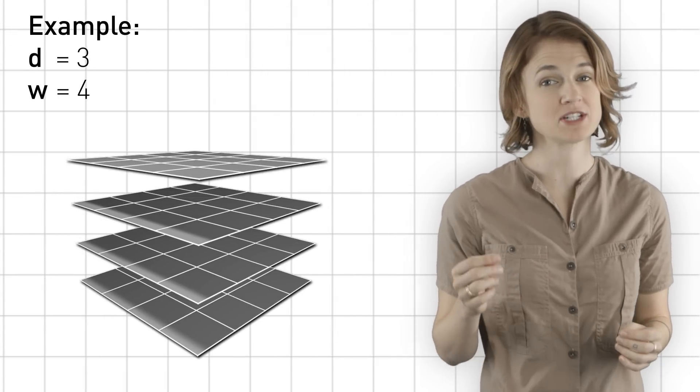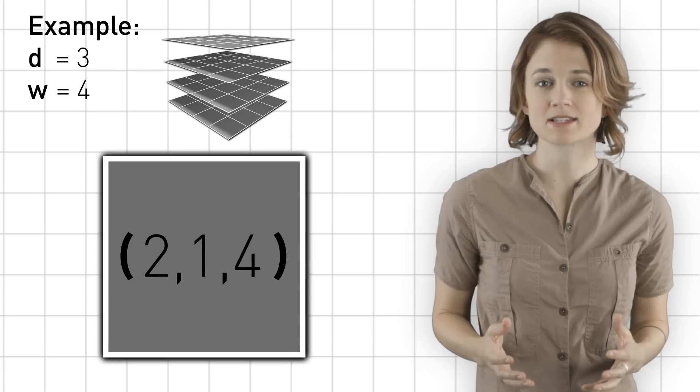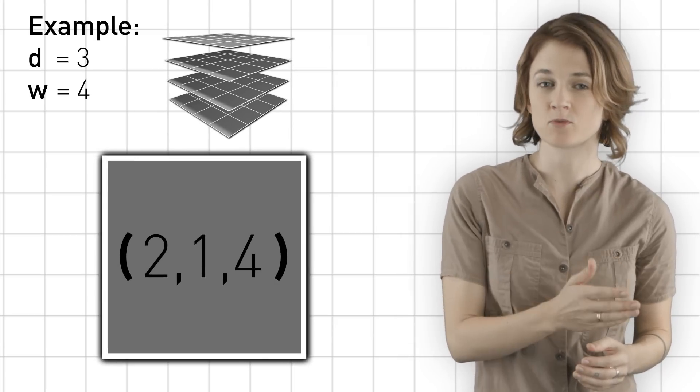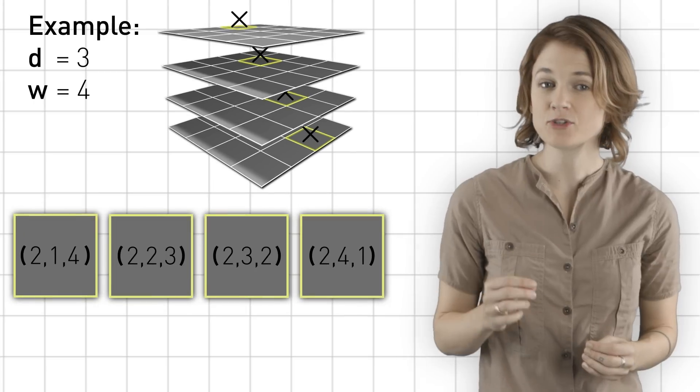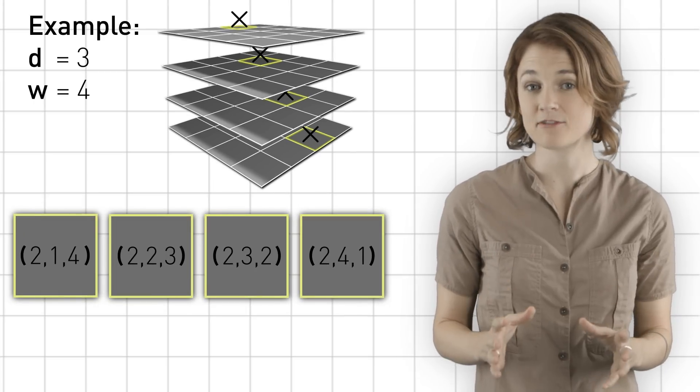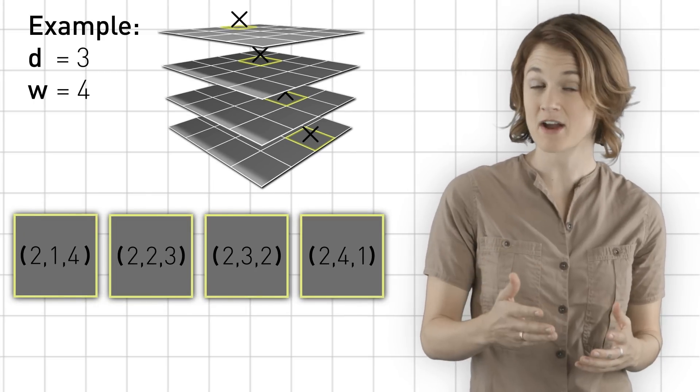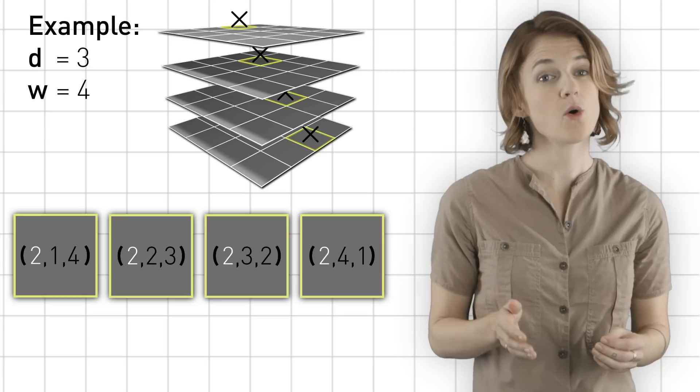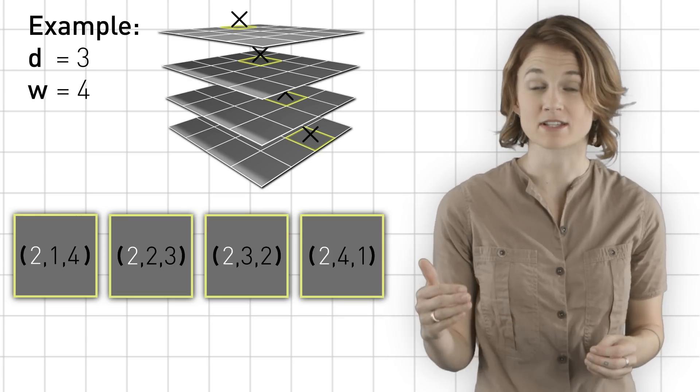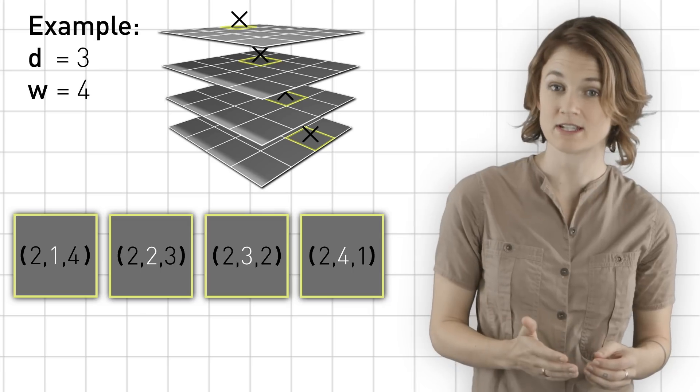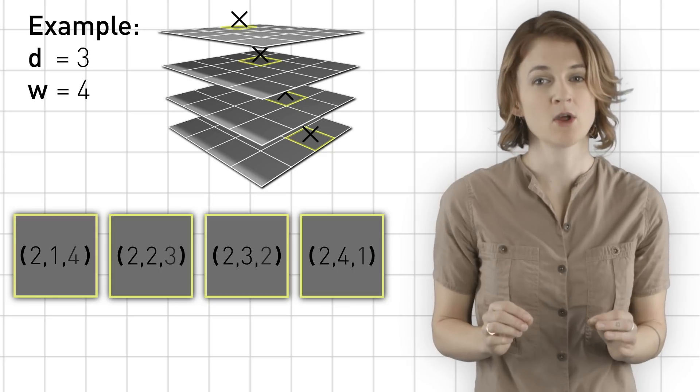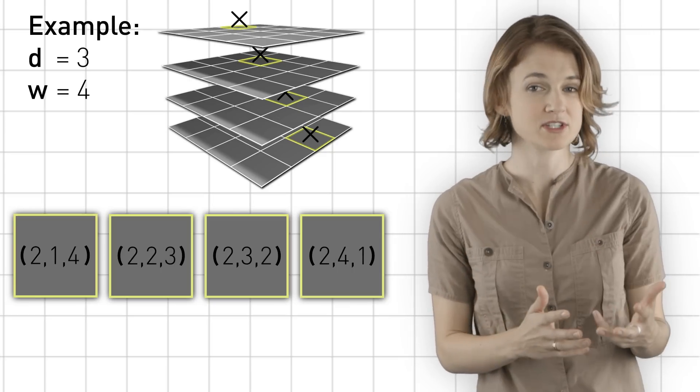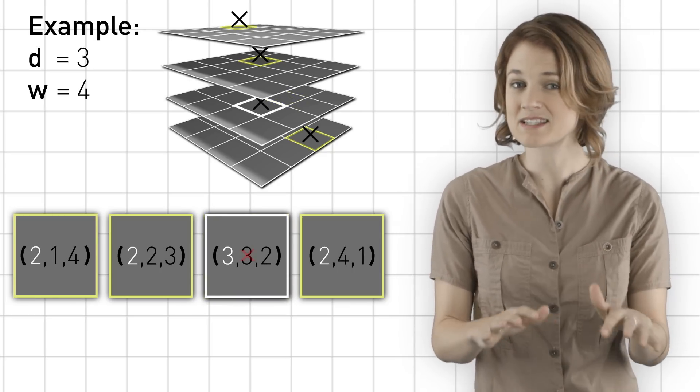So, in general, if you're playing tic-tac-toe on a board of width W and dimension D, then each square is labeled with D coordinates, which are numbers between 1 and W. Then, any set of W boxes makes a line if each coordinate is the same for every box, like this, or different for every box and strictly increasing, like this, or strictly decreasing, like this. If there's even just one coordinate where some boxes agree and others disagree, like this, then it's not a line.